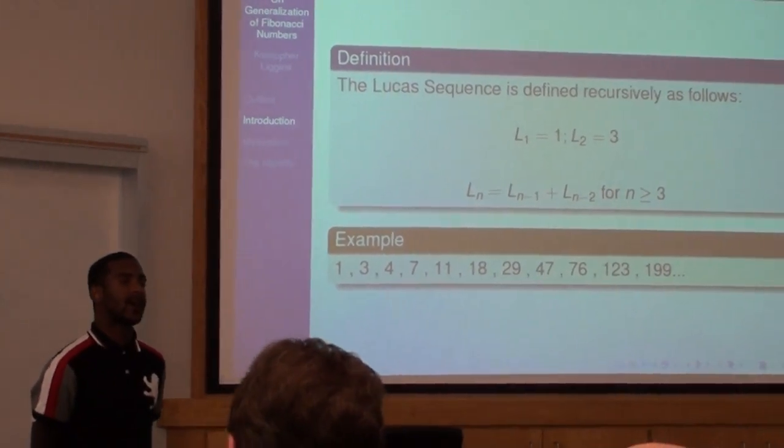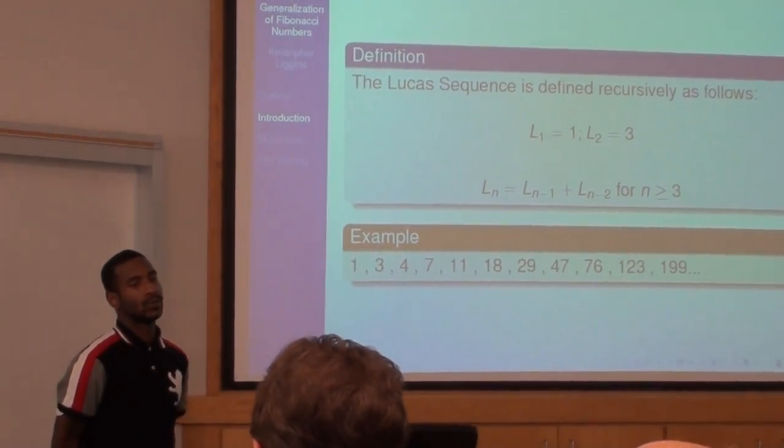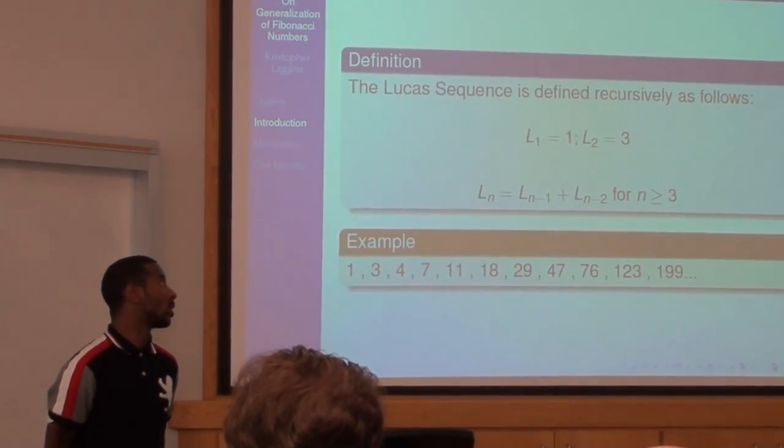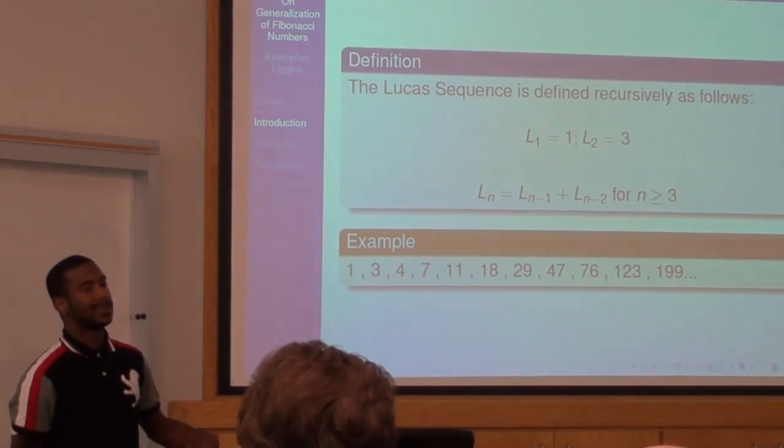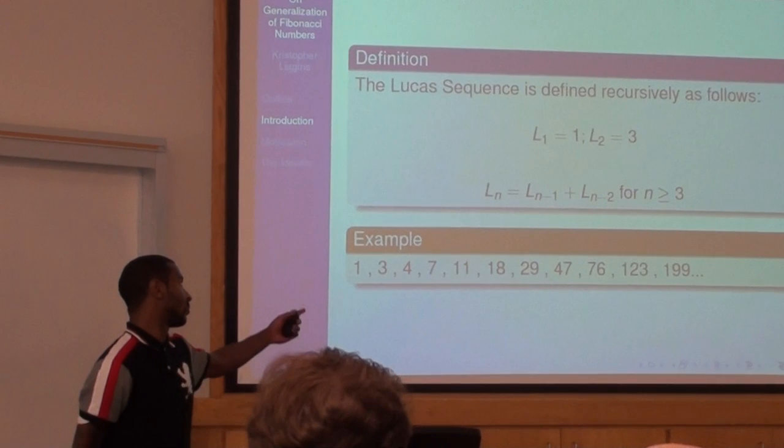The Lucas sequence is defined similarly to the Fibonacci numbers except it begins with L1 to be one, L2 to be three, and Ln is the addition of the preceding two terms, which reveals the sequence.